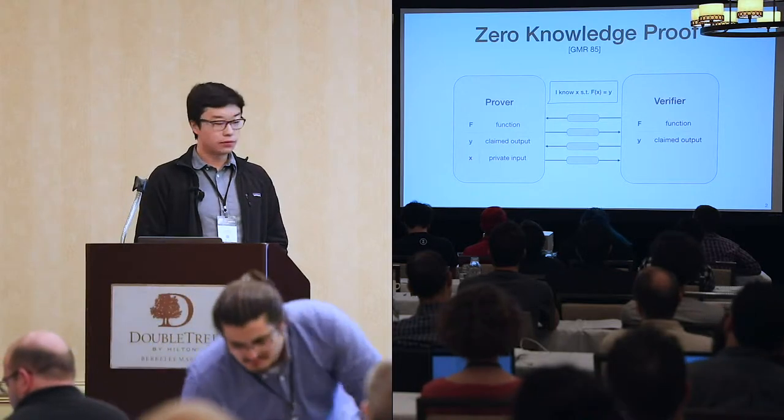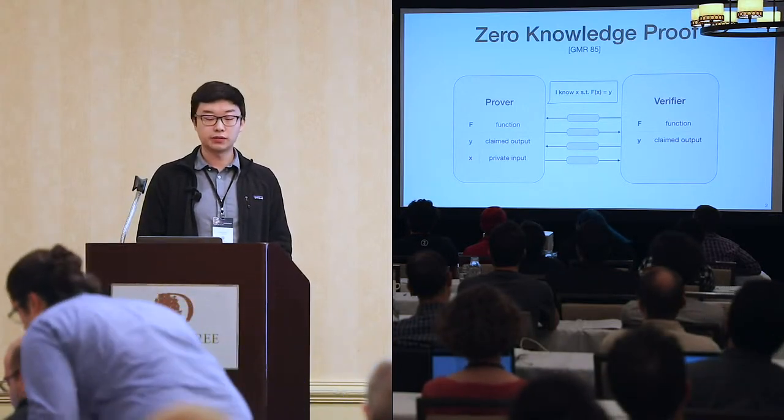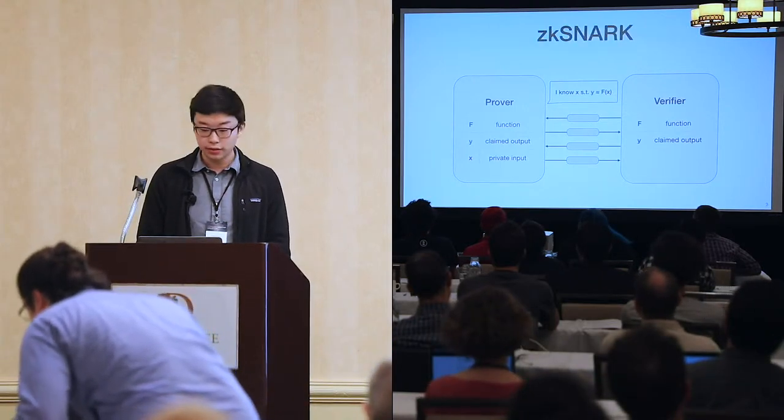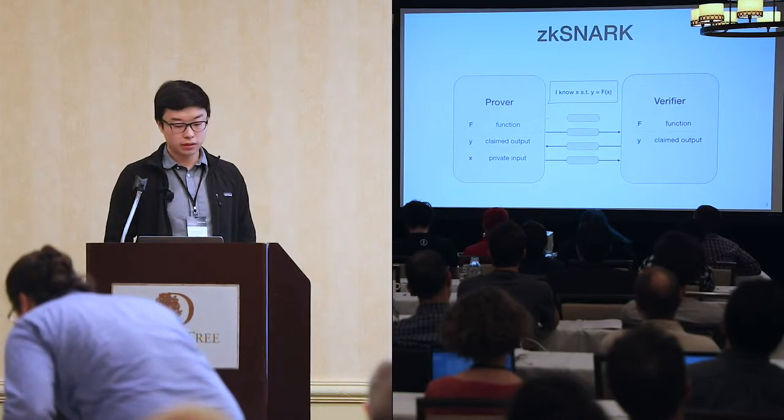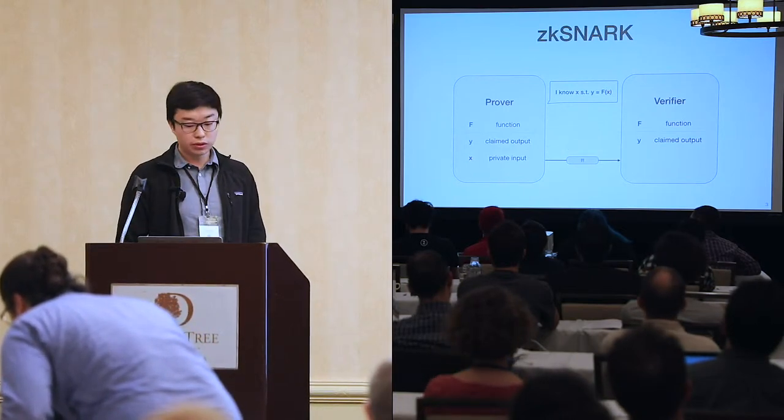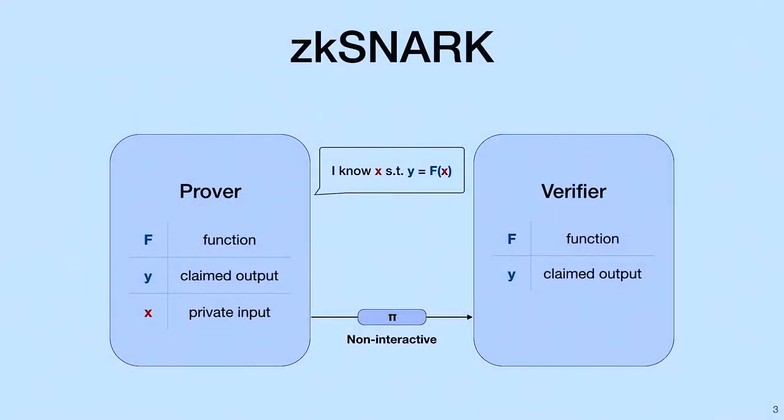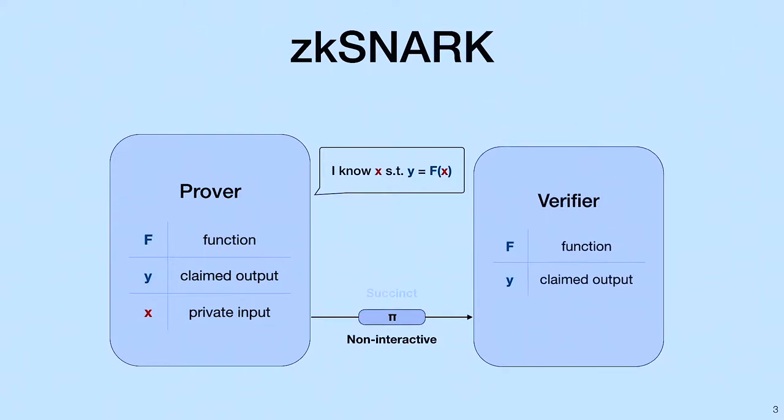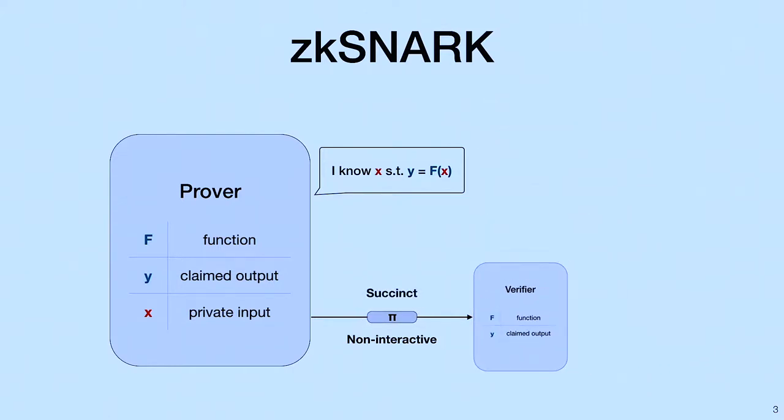Now, one particular type of zero-knowledge proof has recently gained significant attention, and that is ZK-SNARK. A ZK-SNARK is a zero-knowledge proof with a few additional guarantees. For one, it is non-interactive, meaning the prover only needs to provide a proof to convince the verifier that they know the private input x. But also, it is succinct, meaning that the proof is small in size and the verification time is fast.